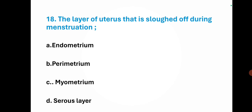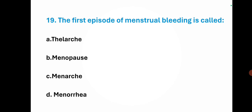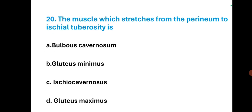The layer of uterus that is shed off during menstruation — the right option is A — endometrium. The first episode of menstrual bleeding is called — the right option is C — menarche. The muscle which stretches from the perineum to ischial tuberosity is — the right option is C — ischiocavernosus.